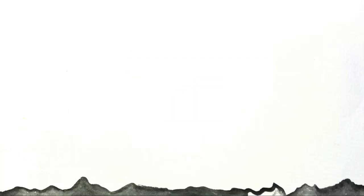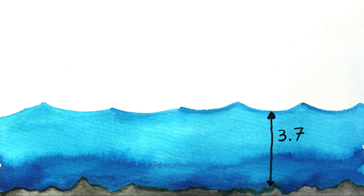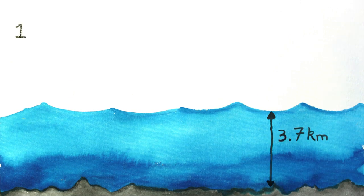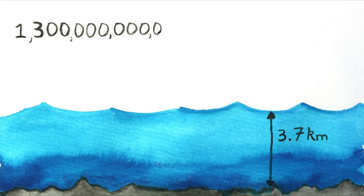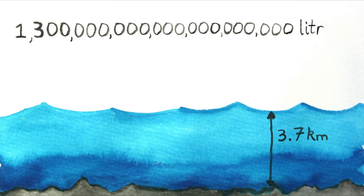And how much water is stored in that huge area? Well, the average depth of the sea is about 3.7 kilometres, so we can calculate the volume is 1.3 billion cubic kilometres. That is over 1.3 billion trillion litres of water in the whole ocean. That's a lot of water.